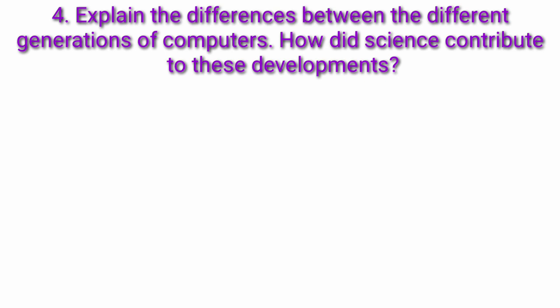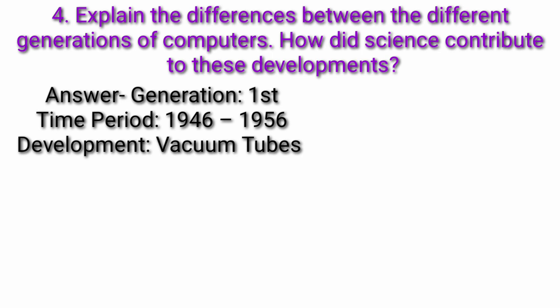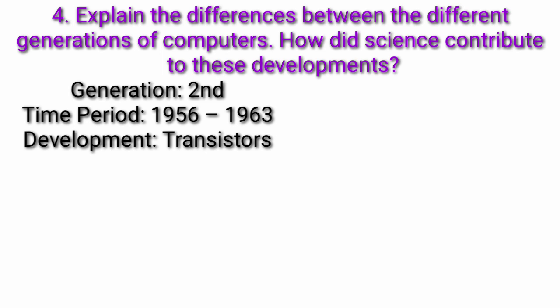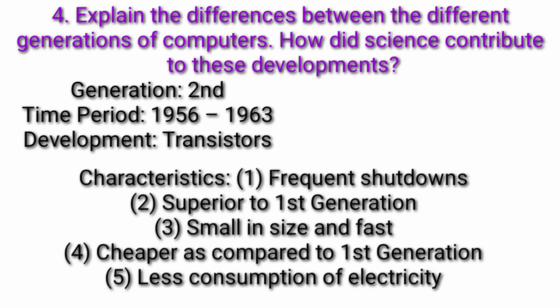Question 4: Explain the differences between the different generations of computers. How did science contribute to these developments? Answer. Generation 1st, Time period 1946-1956, Development Vacuum tubes, Characteristics: Huge in size, Expensive, Lot of electricity consumption, Heat generation. Generation 2nd, Time period 1956-1963, Development: Transistors.